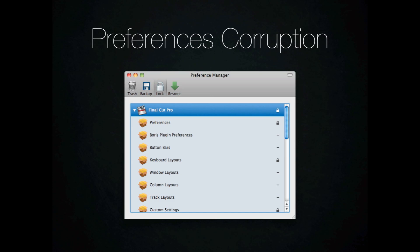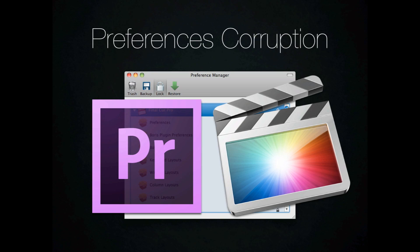Next up is preference corruption — a lot of times weird things happen and the only fix is to delete the preferences within Final Cut Pro X or 7. The truth is, from my research, both applications are a lot more stable than Final Cut Pro 6 and 7. From what I've seen online and in forums, aside from the interface issues some people have with Final Cut Pro X being so different, both of them seem to be a lot more stable than FCP 6 or 7, which makes sense since they're much newer.